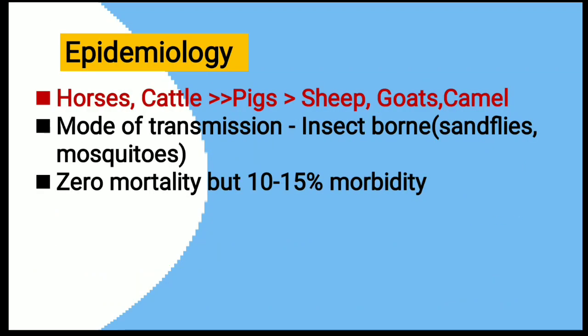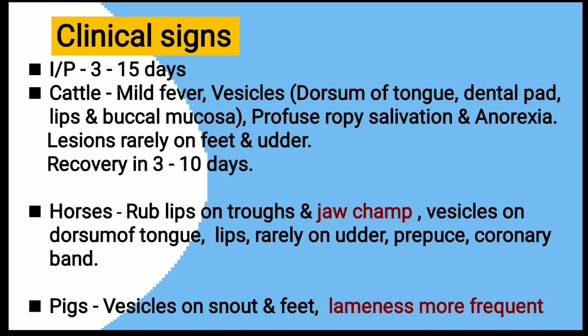Regarding epidemiology, horses and cattle are more susceptible than pigs, and then sheep, goats, and camels. This disease is mainly transmitted by insect vectors like sand flies and mosquitoes. It has zero mortality rate but 10-15% morbidity. The incubation period is 3-15 days.